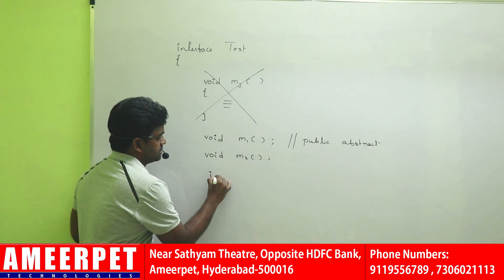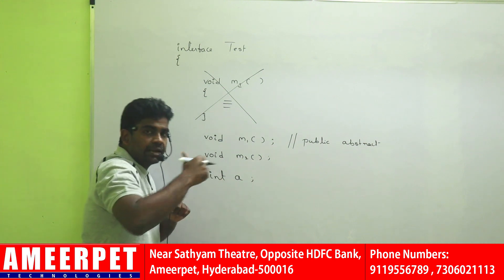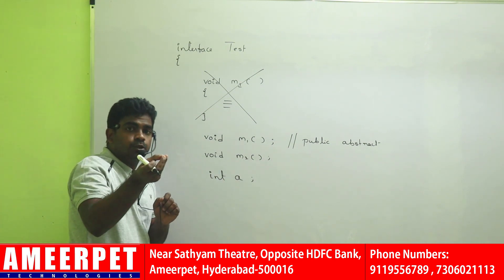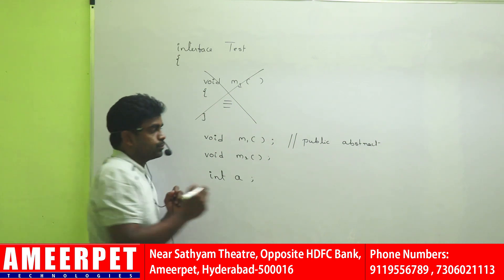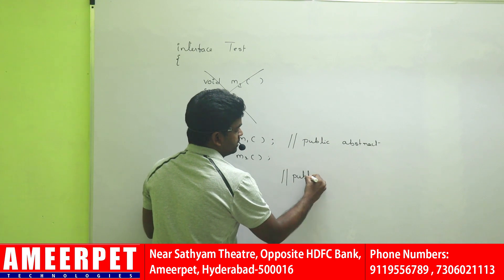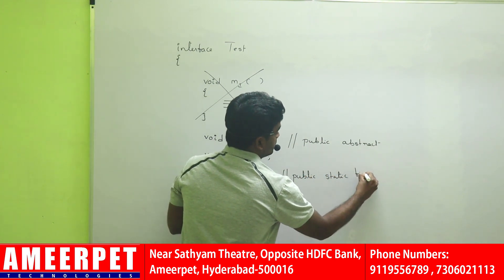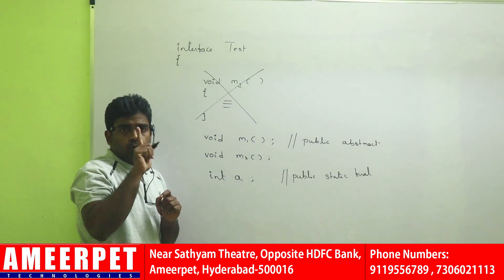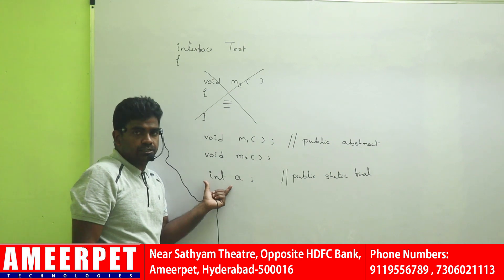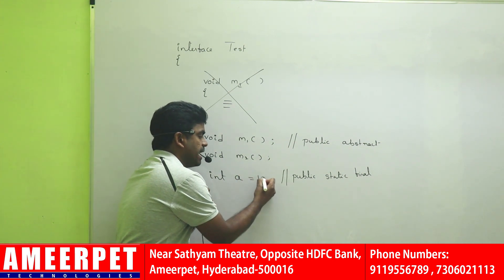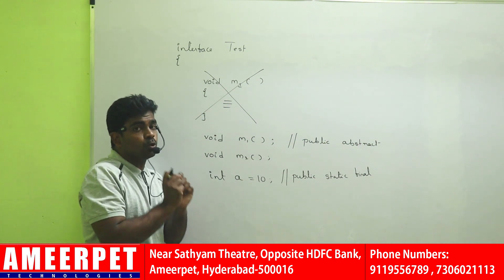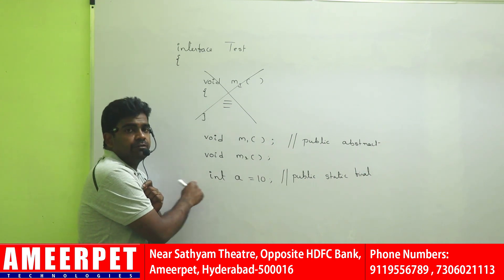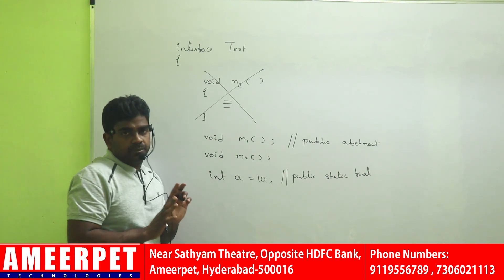If you write a variable like 'int a' and try to compile the interface, you will get an error: assignment is expecting a value. By default, all variables of an interface are public, static, and final. Final means the variable can hold only one value, which you must assign at the time of declaration. Once you assign a value, you will not get any error. This is a static and final variable — not an instance variable.